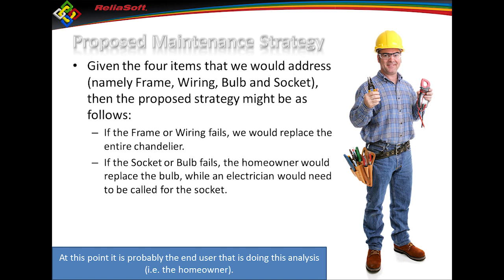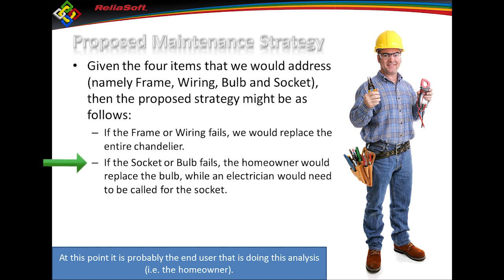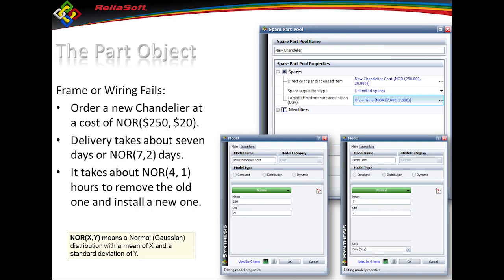Now I'm the homeowner looking at my maintenance strategy for the whole chandelier. Frame fails — will I fix it? No, I'll buy a new chandelier. Wiring fails — probably not, I'll buy a new chandelier. Bulb fails — yes, I'll repair that. Socket fails — I'll repair it at the socket level. That's my strategy. Now I can start creating objects to add costs and other things to make sense of the analysis.